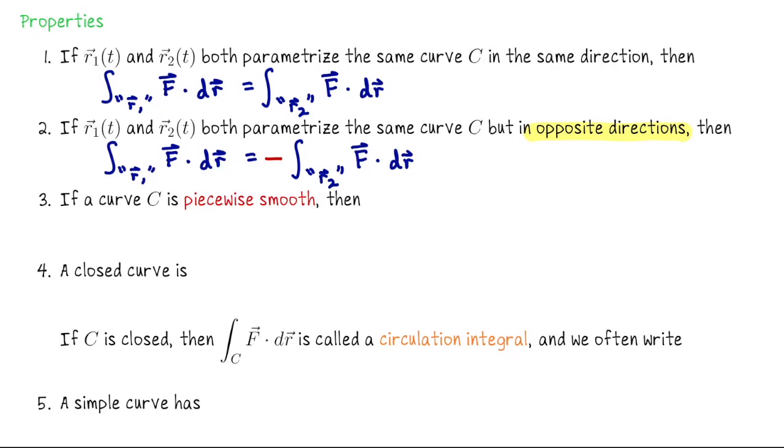Like property number one, property number three is also the same as a property that we saw for scalar line integration. If you can write your curve using two pieces, say you can parametrize these two pieces C₁ and C₂ and then write your curve as this kind of sum C₁ plus C₂, meaning take C₁ and then take C₂, then if you want to compute the vector line integral of some vector field F along C, you can just do it along C₁ and C₂ and then add them together. So you can break your curve up into pieces.